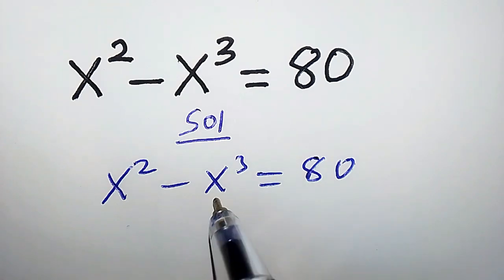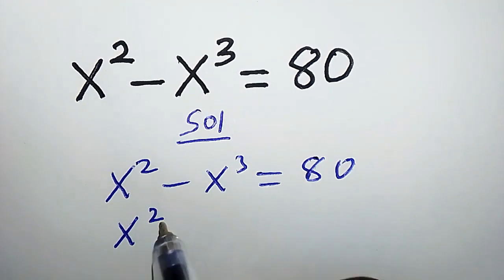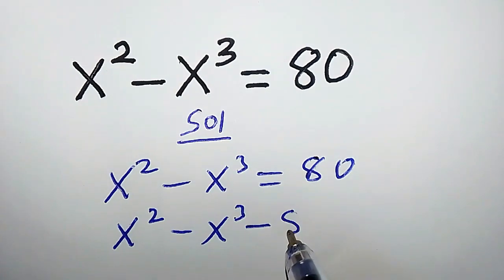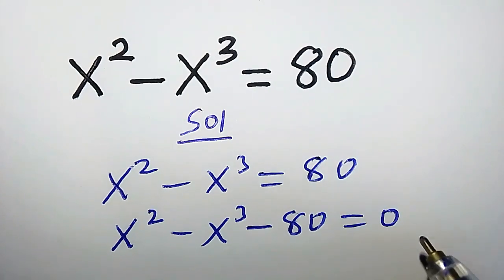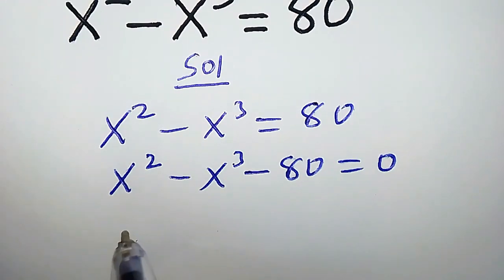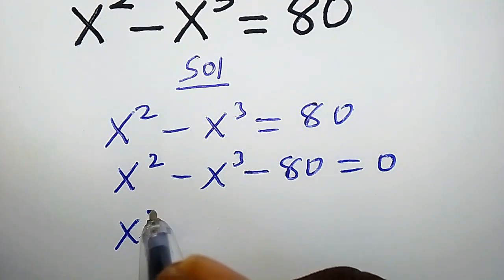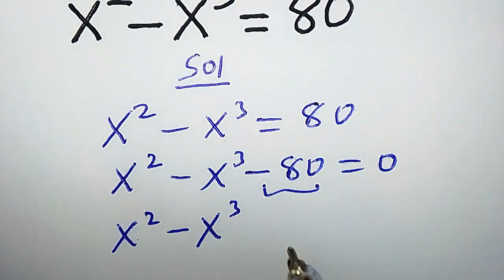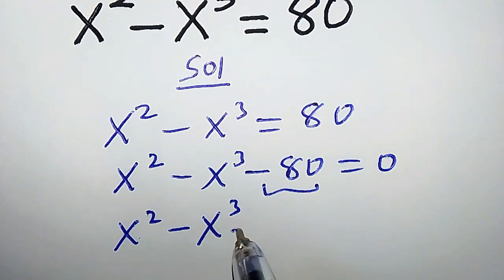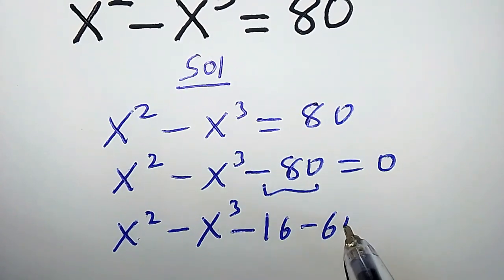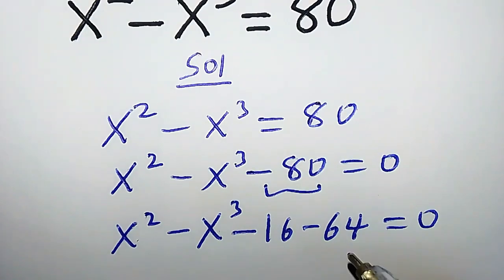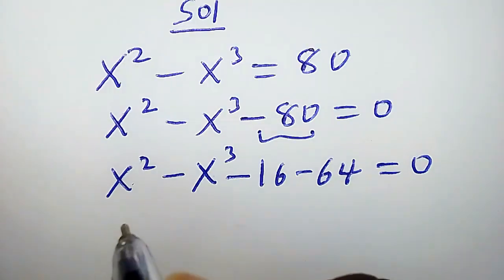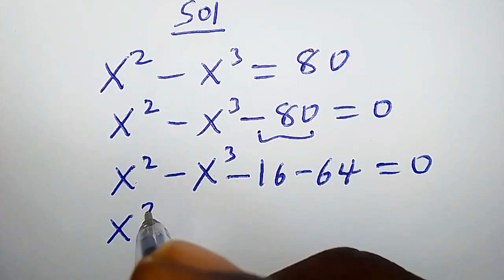Let's bring this to the left side, so we're going to have x squared minus x cubed minus 80 equals zero. Let's proceed further: x squared minus x cubed, we can write negative 80 as minus 16 minus 64, equals zero.